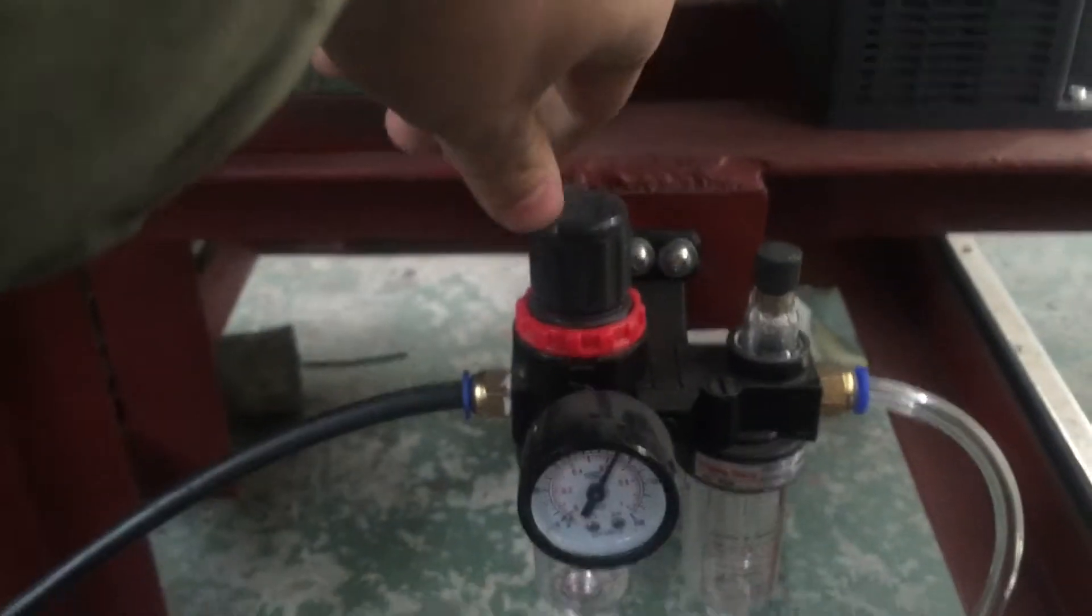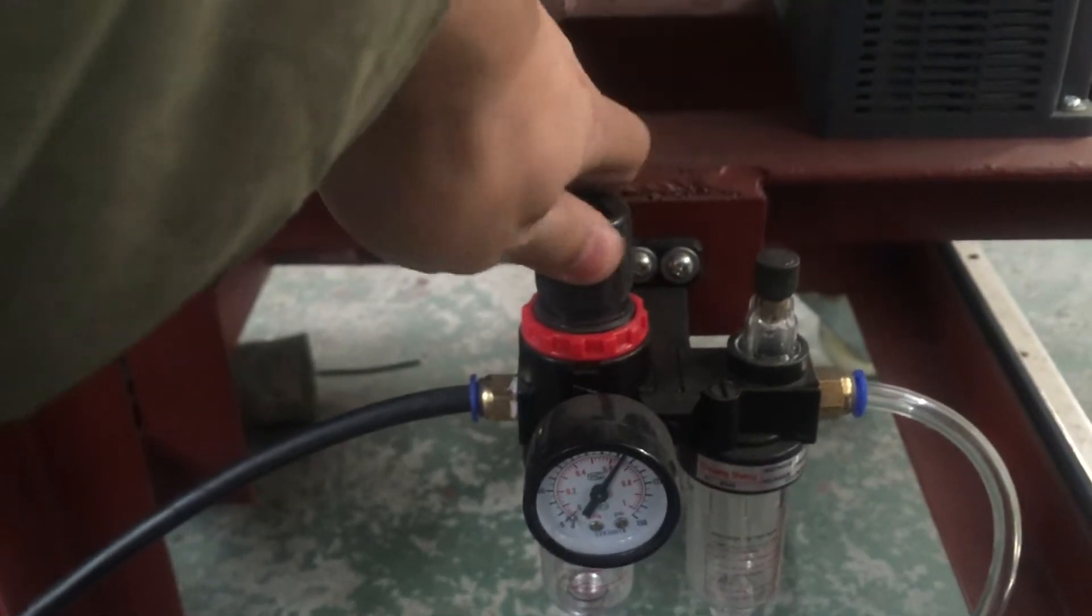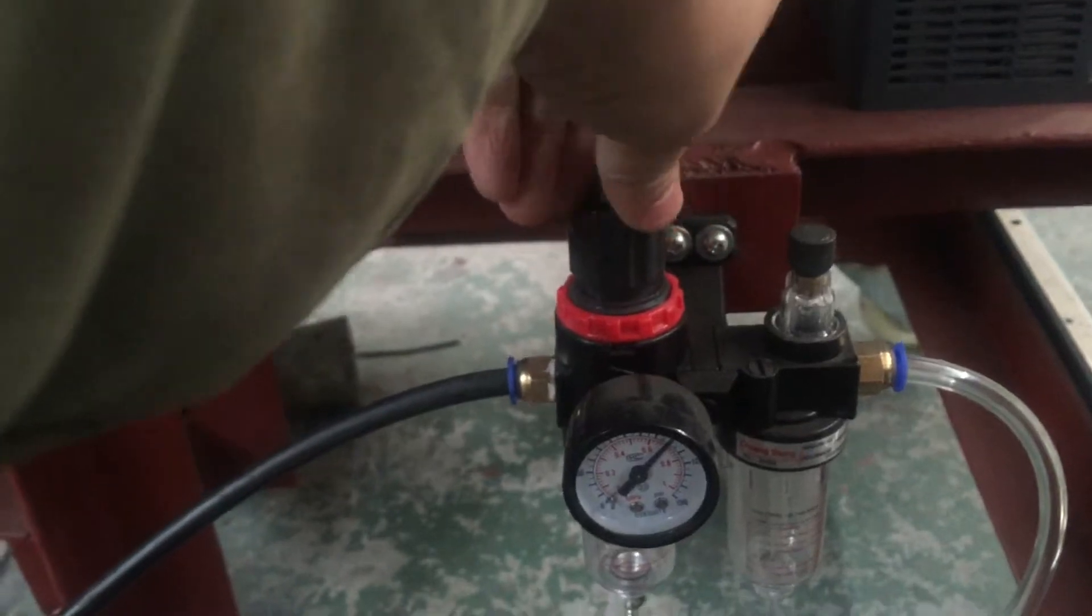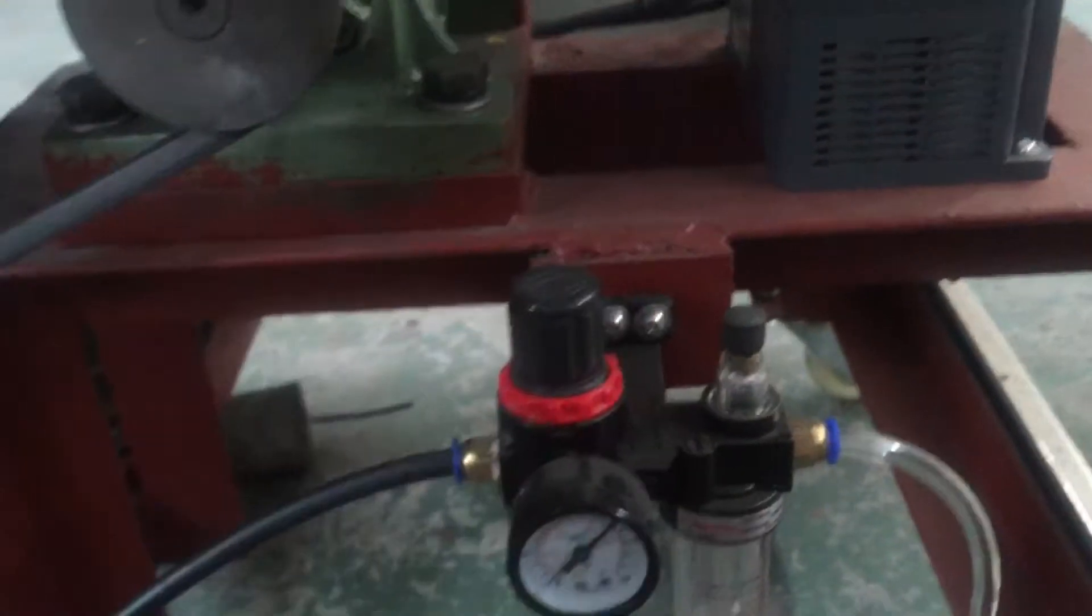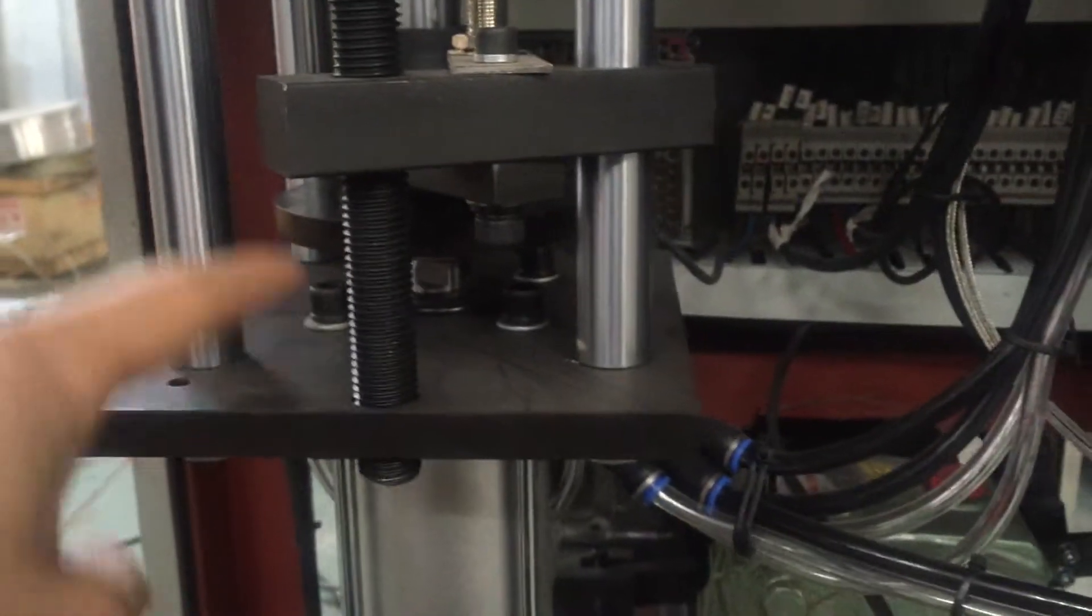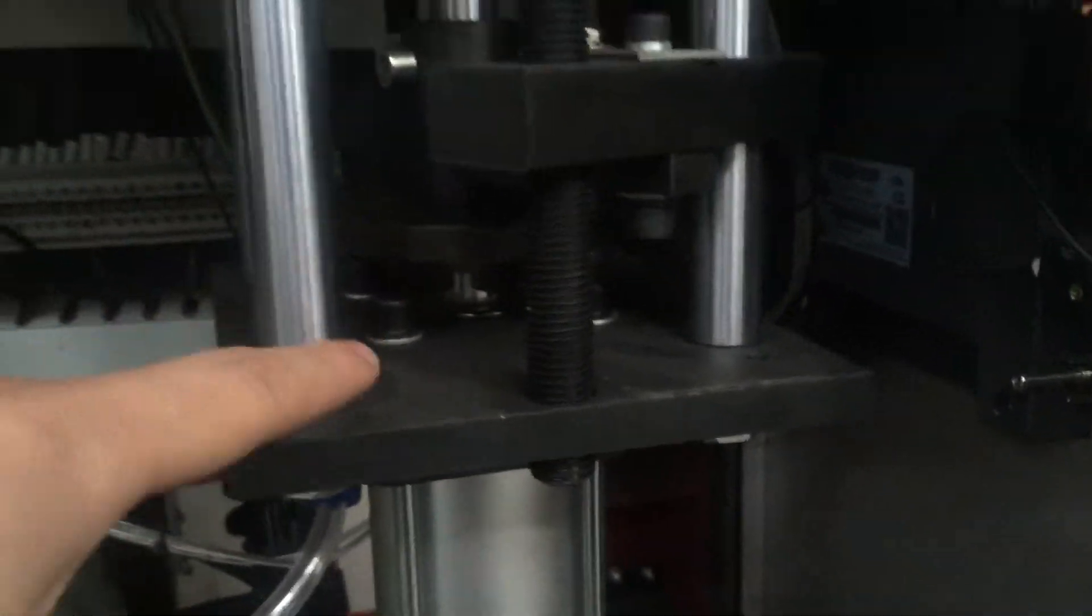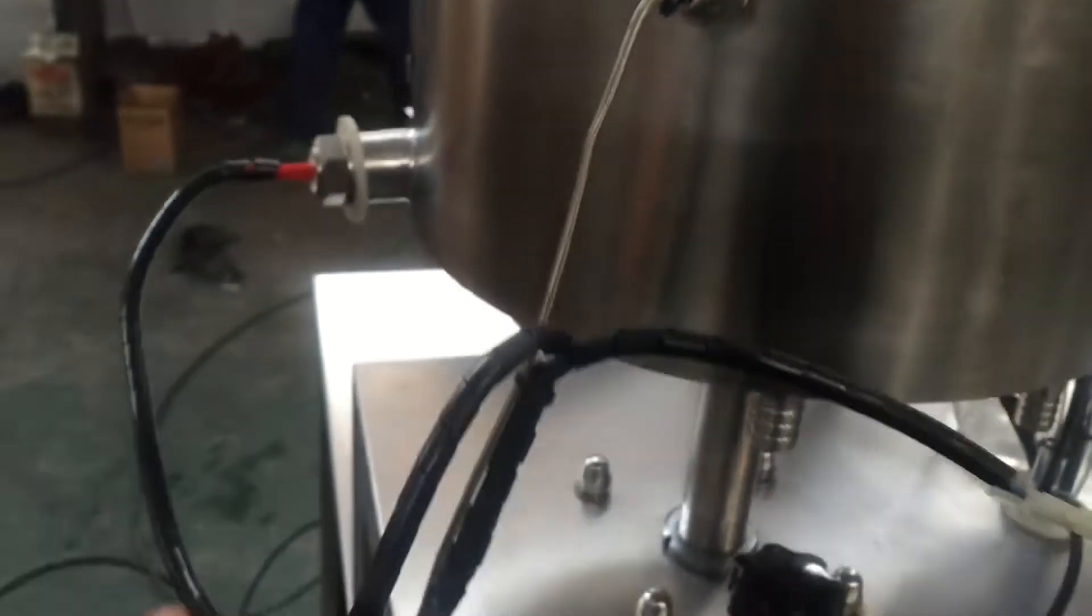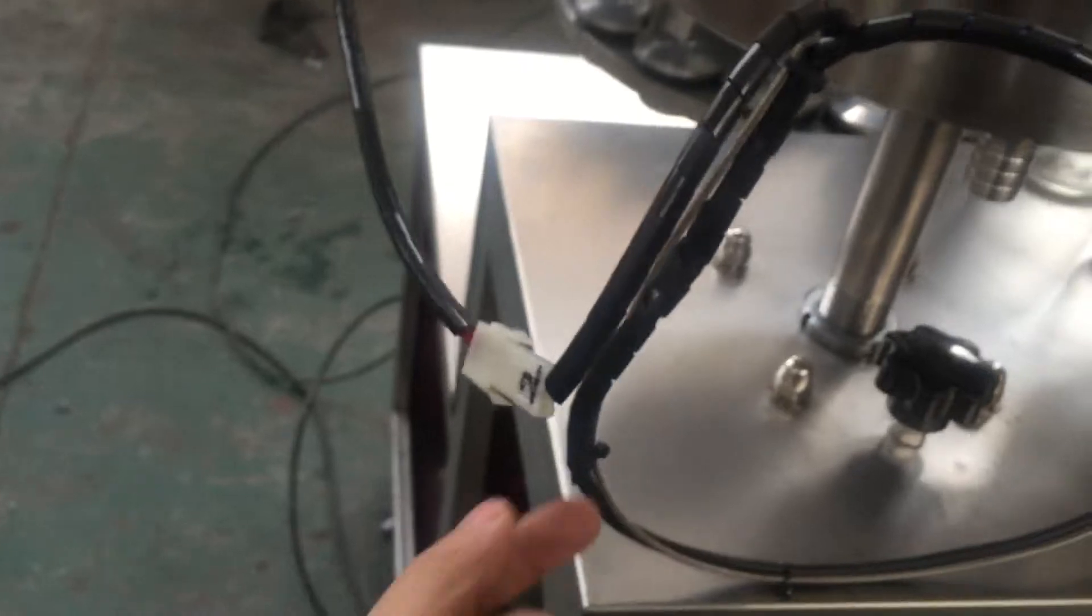Here you can adjust the air pressure and lock it. Here is the volume for the distance. Volume for the distance to adjust the volume, and here is the valve for the air tank.